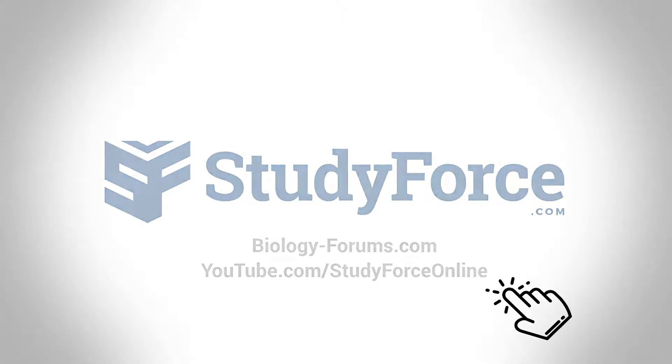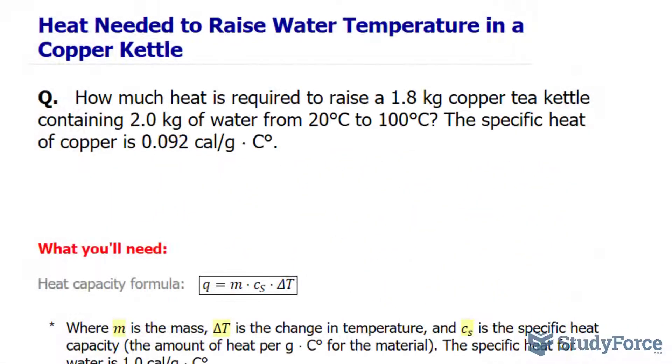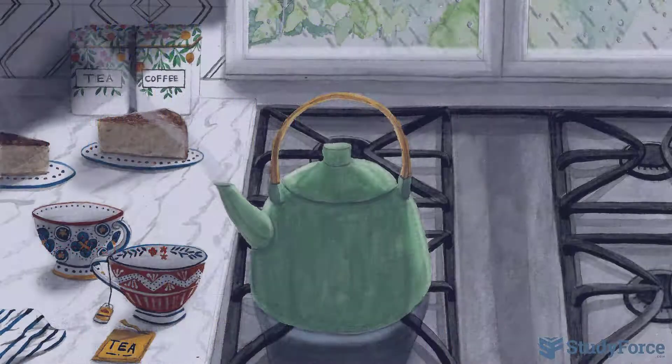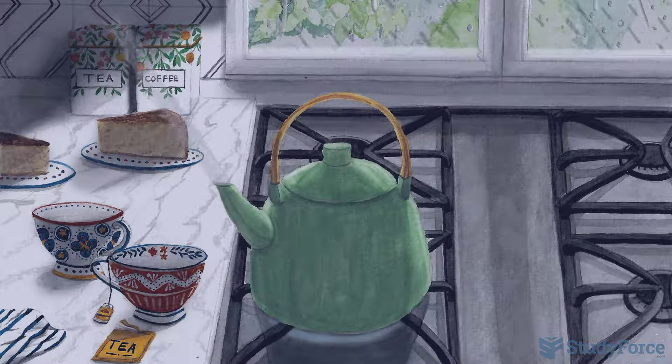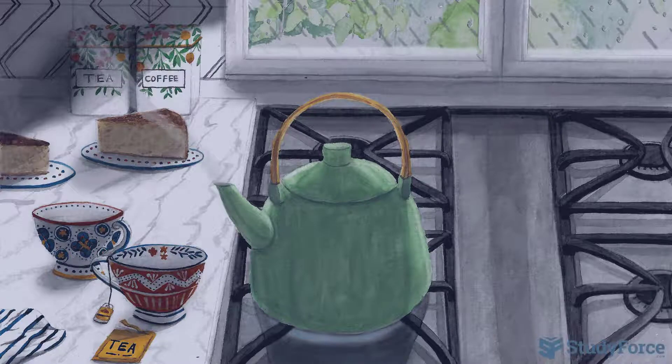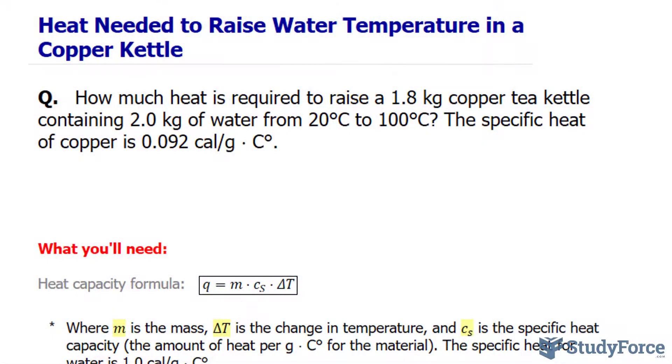Imagine you have a tea kettle made up of copper and you fill it up with water that is 20 degrees. How much energy is required to raise the 20 degrees Celsius to 100 degrees Celsius if the copper tea kettle is 1.8 kilograms and the amount of water that we put in is 2.0 kilograms? That's precisely what we're trying to answer here, which is a calorimetry problem.